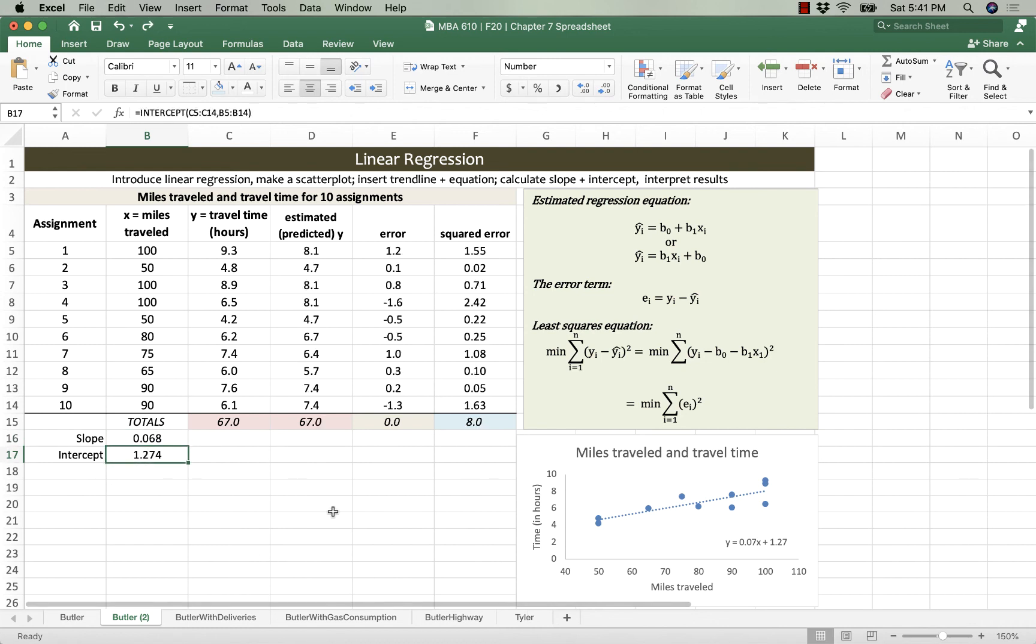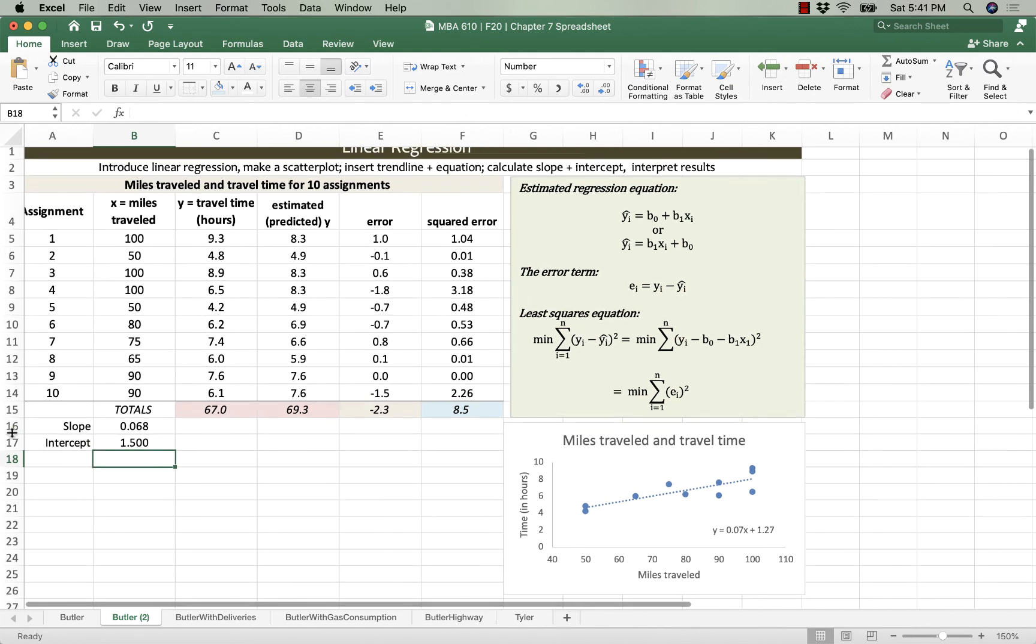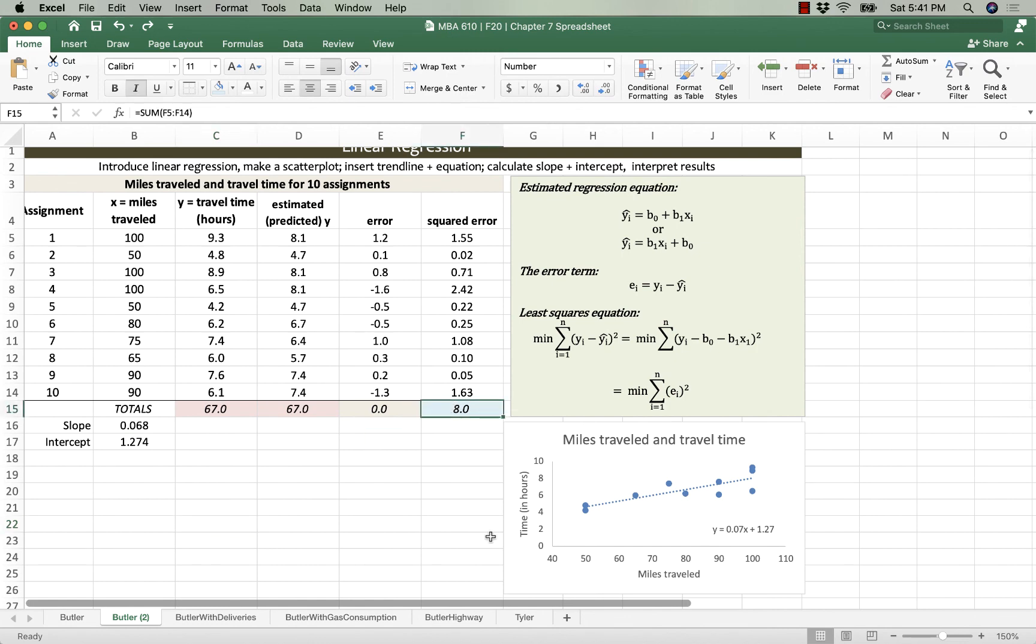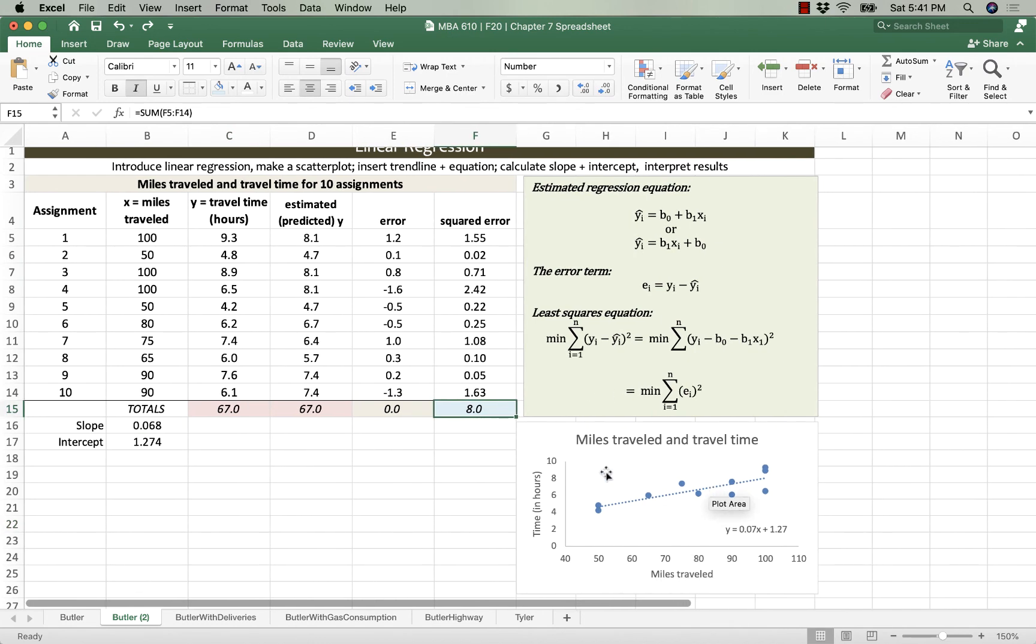Similarly, if I change my intercept from 1.274 to 1.3, I'm going to pick a different number because that didn't change it dramatically enough to change it to one decimal place. It's 1.5. So this squared error is minimized for this data because of the ordinary least squared method.